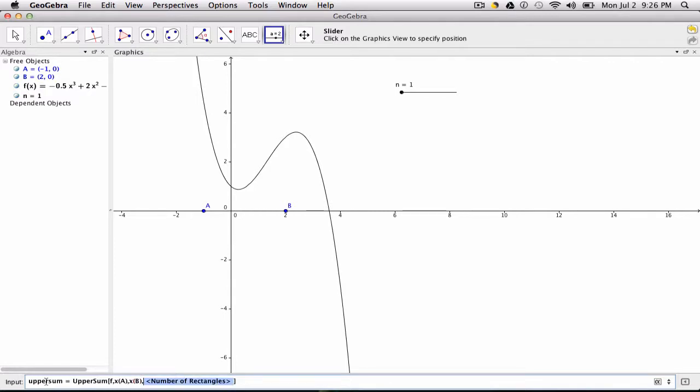Then it wants to know what x value do we end at, so you type in x parentheses capital B, the x value of point B. And then it wants to know how many rectangles do you want to use. We don't want to set it to any number of rectangles, we want to understand how increasing the number of rectangles helps us approximate the area under the curve. So we set that number equal to n, which is our variable on our slider. And you can see it gives us one rectangle because here the variable for n is set at one.